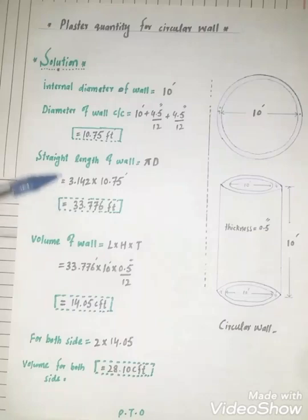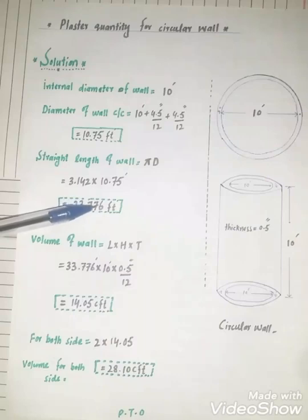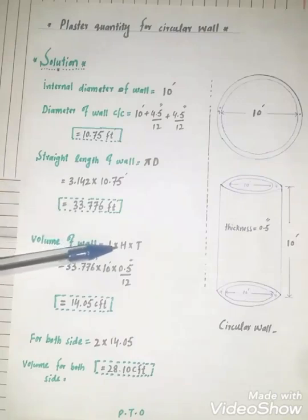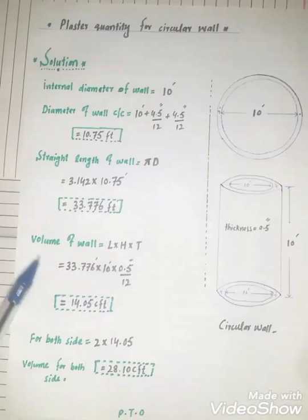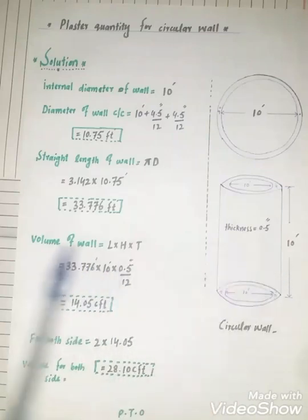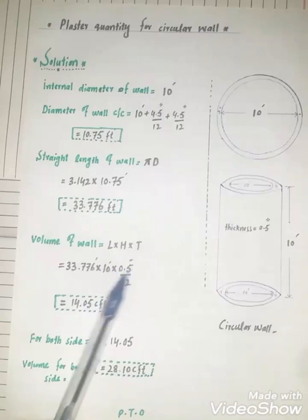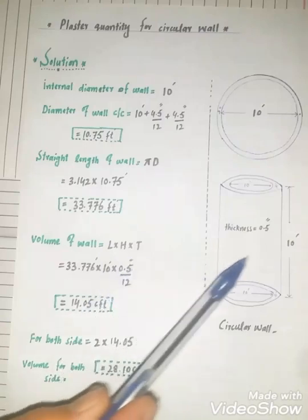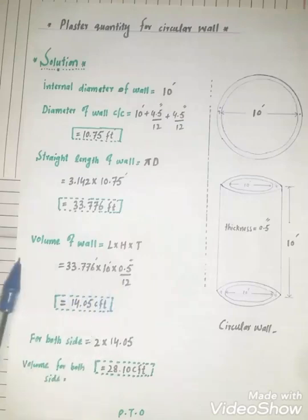Now find the volume of wall. Wall stretch length multiply by height multiply by thickness of plaster. The stretch length is 33.776 feet multiply by 10 feet, this is the height of wall, multiply by 0.5 inch, this is the thickness of plaster. An inch divided by 12 to convert from inch to feet.